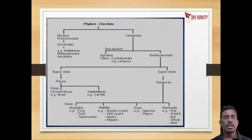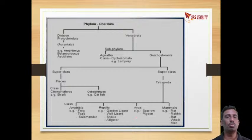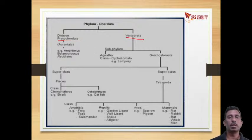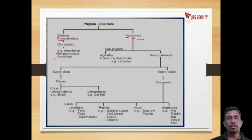Now comes the classification of Chordata. It is divided into two divisions: Protochordata and Vertebrata. Protochordata includes Acraniates — examples are Amphioxus and Balanoglossus. Vertebrata is divided into two sub-groups: Agnatha (without jaws) and Gnathostomata (with jaws).